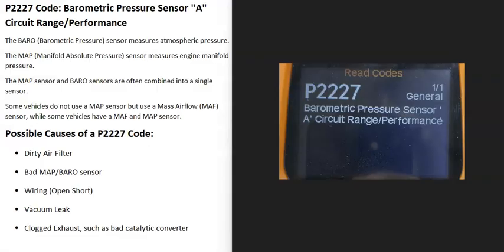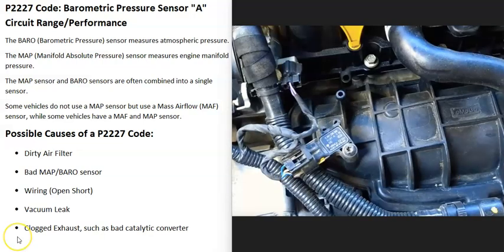Today I'm talking about a P2227 code — what it is and how you go about fixing it. A P2227 code is a barometric pressure sensor circuit range performance issue. Basically, there are sensors measuring all the air going into the engine and also the type of air going into the engine.